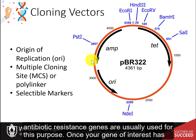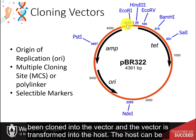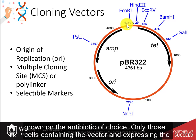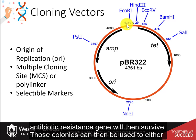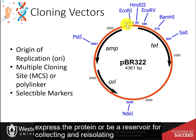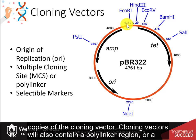In bacterial systems, antibiotic resistance genes are usually used for this purpose. Once your gene of interest has been cloned into the vector and the vector is transformed into the host, the host can be grown on the antibiotic of choice. Only host cells containing the vector and expressing the antibiotic resistance gene will then survive. Those colonies can then be used to either express the protein or be a reservoir for collecting and re-isolating copies of the cloning vector.